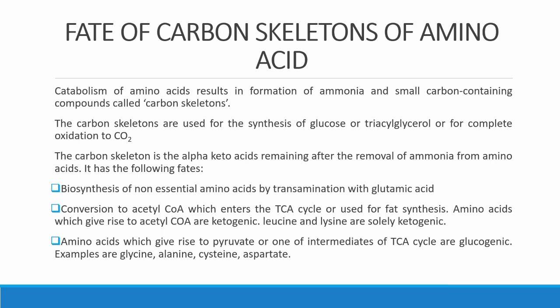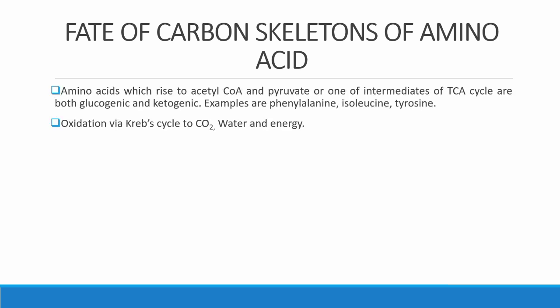Amino acids whose carbon skeleton is converted to acetyl-CoA are called ketogenic. Some amino acids can be both — their carbon skeleton can be converted to TCA intermediates, pyruvate, or acetyl-CoA. Examples include phenylalanine and tyrosine. These can be oxidized by the TCA cycle to form carbon dioxide, water, and energy, or enter gluconeogenesis to form glucose, or their acetyl-CoA can go on to form fatty acids.